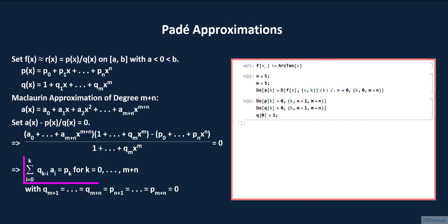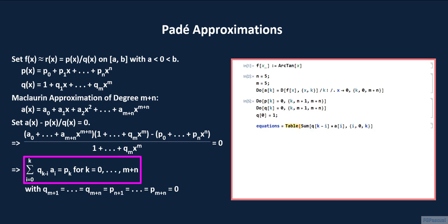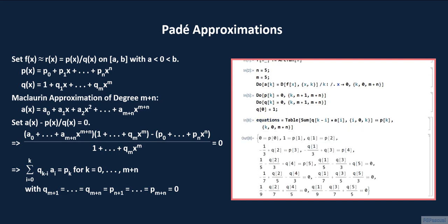Next, we generate the system of equations, which we simply call 'equations'. Since this is a system of equations, we use the Table command. The left side is the sum of q sub k minus i times a sub i, where i goes from 0 to k. This should equal p sub k, so we use two equal signs for the equation. For the table, k goes from 0 to m plus n. When we evaluate this input line, we see what the system of equations looks like. We then hide these equations by putting a semicolon at the end and re-evaluating.